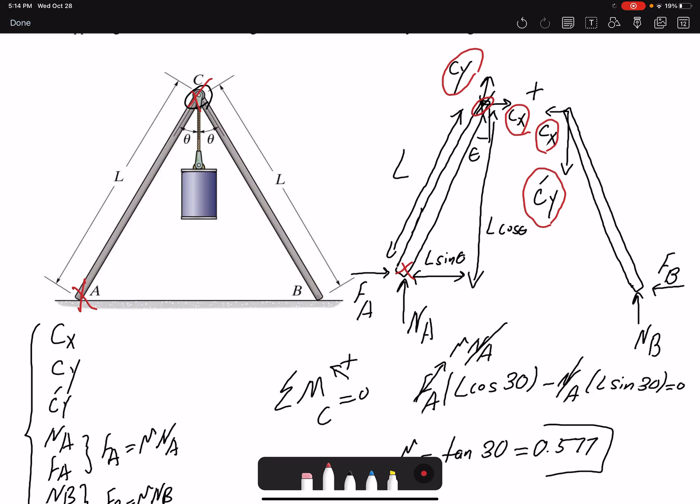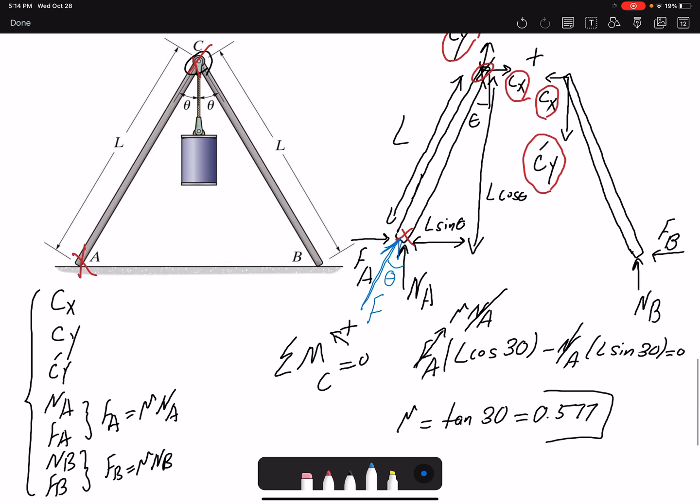So what does that mean when a member is a two-force member? What is the consequence? That means that the member is either in tension or compression. So the summation of these forces should be in this direction, I call this F, and this angle is theta or 30 degrees.